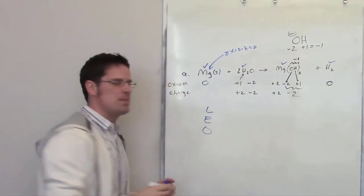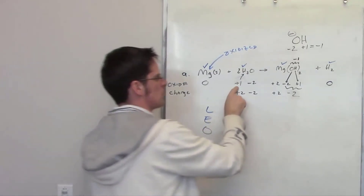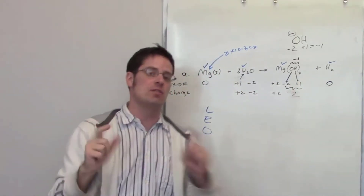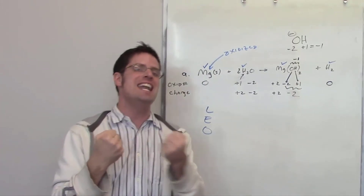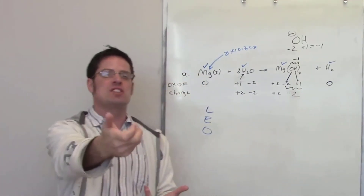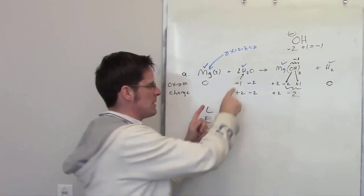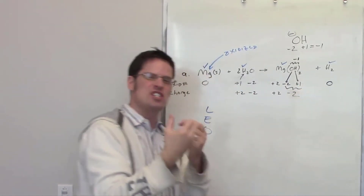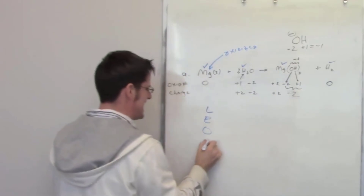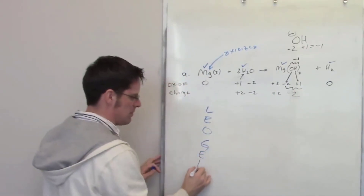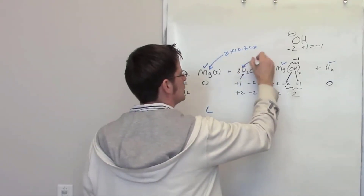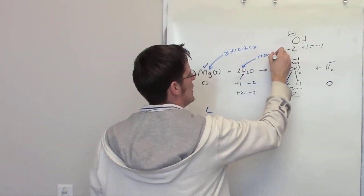Which element has been reduced? Hydrogen goes from +1 to 0 — it's becoming less positive, or more negative. How does an element do that? By receiving electrons. So hydrogen has received electrons. If you're gaining electrons, that means reduction. So this hydrogen has been reduced.